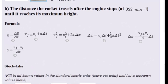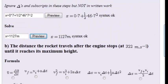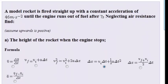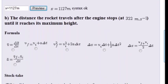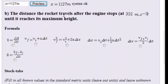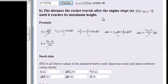The second part of this question — let's remind ourselves of the initial question. A model rocket is fired into the air, it accelerates upwards at 46 meters per second squared, and the engine runs out of fuel after seven seconds, so then it stops accelerating. Neglecting air resistance, we are now at part B: find the distance the rocket travels after the engine stops until it reaches its maximum height.